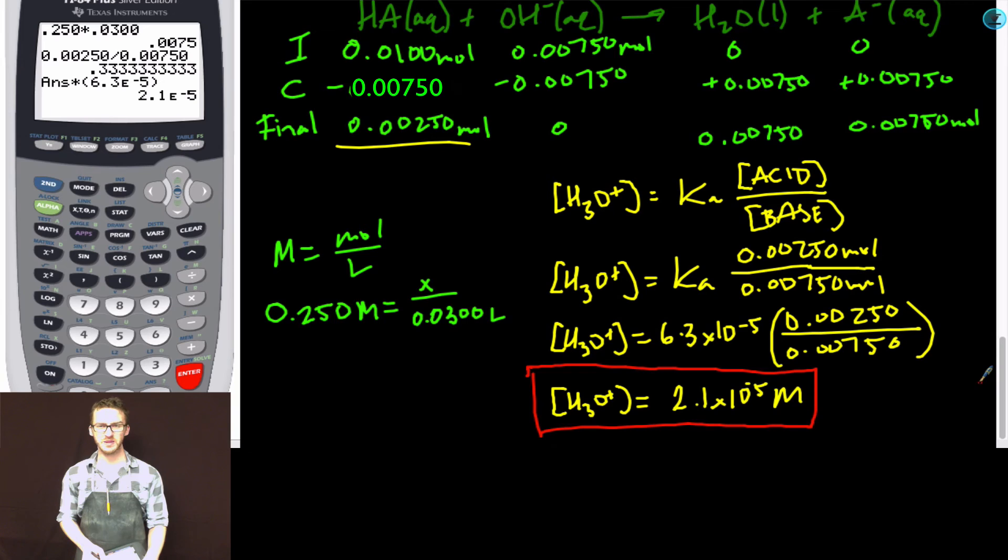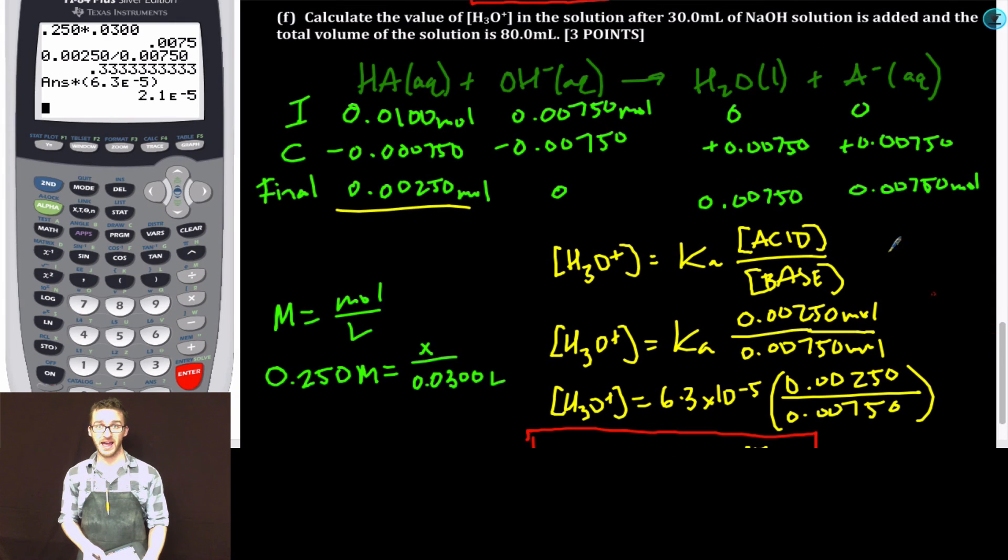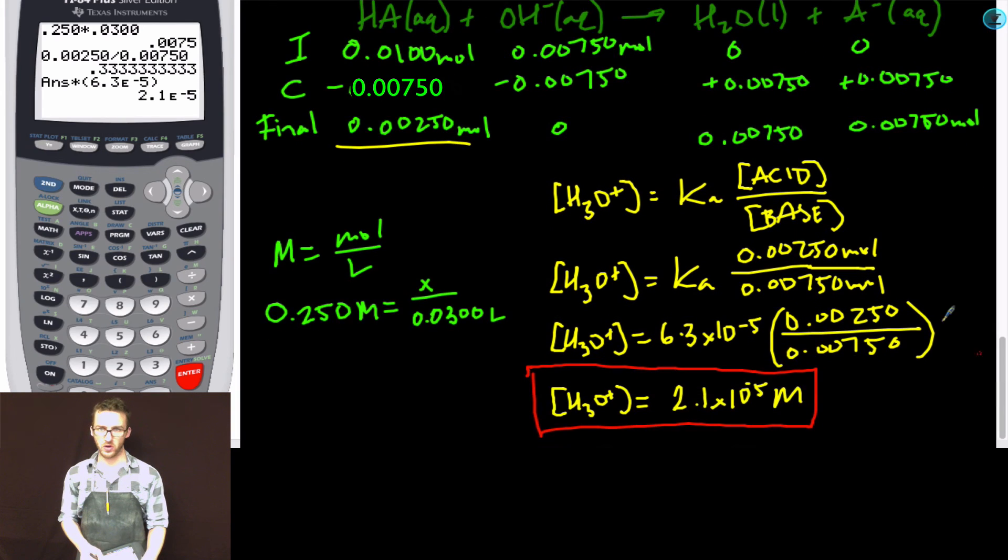On second thought, because this is the college board, it's probably a good idea that you do use the concentrations of your weak acid and conjugate base, and not just the number of moles. But realize that in the problem, part F, they tell you the total volume of the solution is 80 milliliters. And so if we were to sub in 80 milliliters here, realize that would give us concentrations, but it would still give us the same answer because again, those volumes would cancel out. Have a fantastic day.